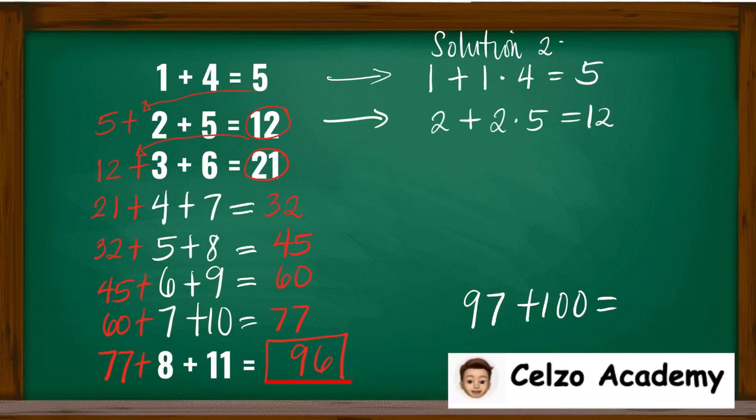The second is the same thing as 2 plus 2 times 5, which is 12. Third one is the same thing as 3 plus 3 times 6, which is 21, and so on.